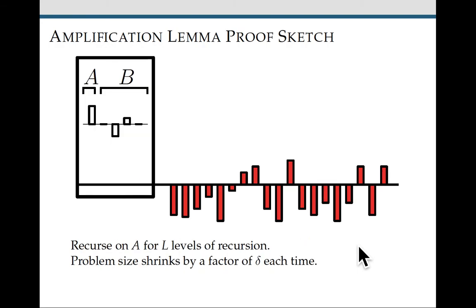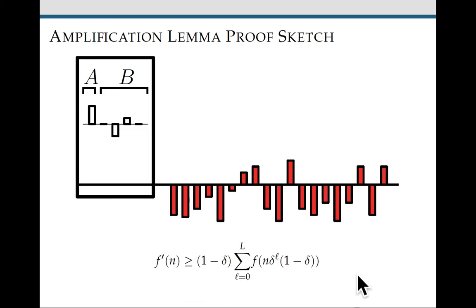So now that a has high average fill, we can decrease p and recurse on a. If we recurse on a for l levels of recursion, shrinking the problem size by a factor of delta every time, we get this sum for the backlog as desired.